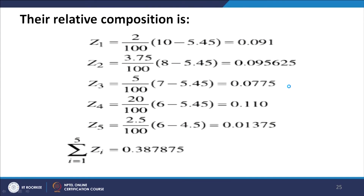The rest is easy. With C* = 5.45, we work out Z_1, Z_2, Z_3, Z_4, and Z_5 as in the earlier case, but stop at Z_5. Beyond Z_5, we would get a negative value and therefore cannot consider it — short sales are not allowed.